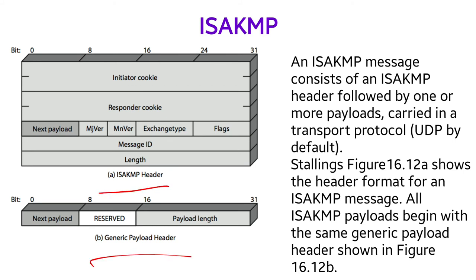The ISAKMP header structure consists of an ISAKMP header followed by one or more payloads carried in the transport protocol. It prefers UDP over TCP/IP. All payloads begin with the same generic payload header, so you need to understand what a payload is.